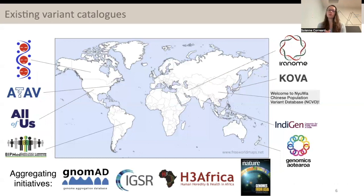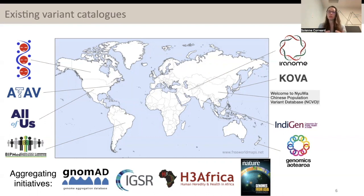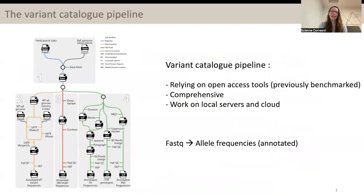This is a known issue, so several variant catalogues were generated around the world. For example, IRANOME with the Iranian population or KOVA with the Korean population. The project I was working on is the Silent Genomes Project in Canada. It's a partnership with the indigenous populations of Canada to build the indigenous background variant library. A very similar project is taking place in New Zealand with Genomics Aotearoa, where they are working with the Maori population. And so, when we were working on the indigenous background variant library, we needed a pipeline to process the data to get the variant frequencies.